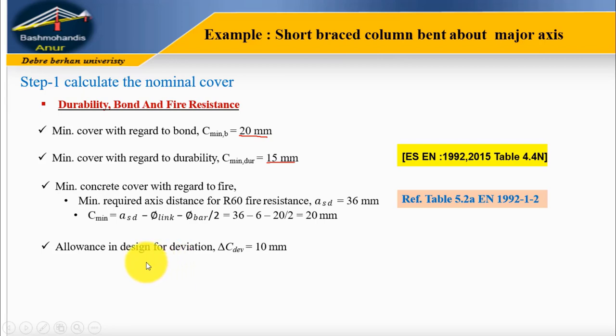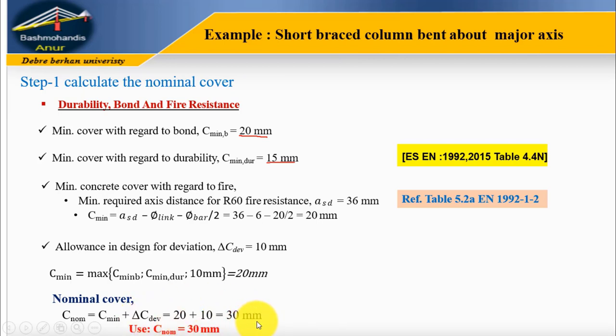The reduction factor is 0.5. The minimum required axis distance ASDB for R60 is 36 mm. Therefore, C minimum fire equals ASDB minus diameter of main bar divided by 2, which equals 20 mm. The allowance in design for deviation delta C dev is typically 10 mm. Therefore, the nominal cover C nominal equals C minimum plus delta C dev, equals 30 mm.